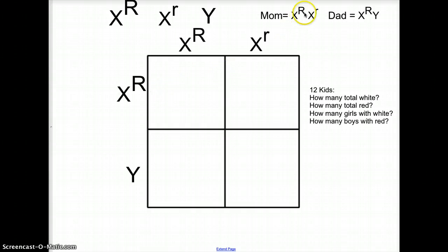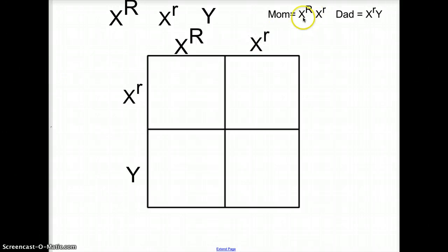So let's use this example. Mom is X^R X^r and dad is X^r Y. Mom is always going to be XX, dad is always going to be XY, but these letters might change. So mom has a dominant gene and a recessive gene, so mom is heterozygous. Dad has just the recessive gene on his X and nothing on the Y. So let's say big R will stand for red eyes and little r will stand for white eyes. So in this example, mom would have red eyes and dad would have white eyes because he has little r.